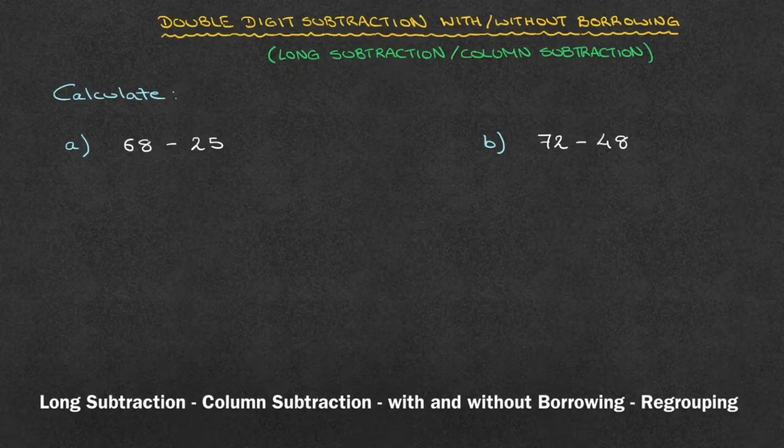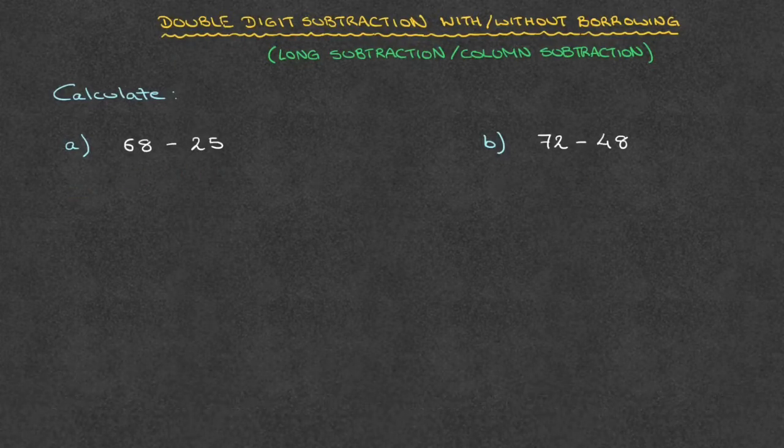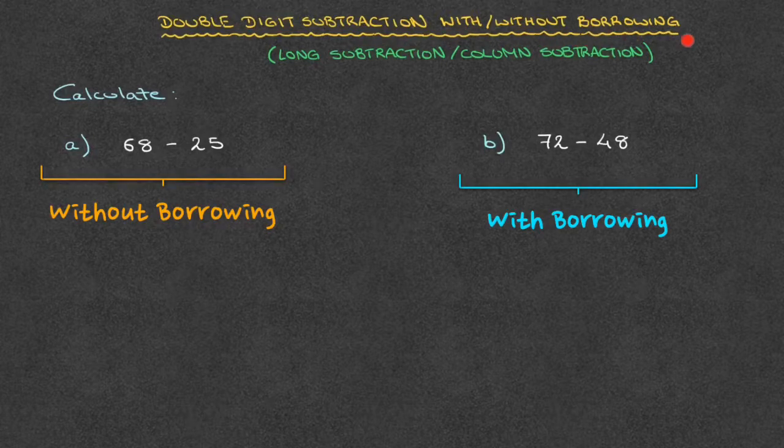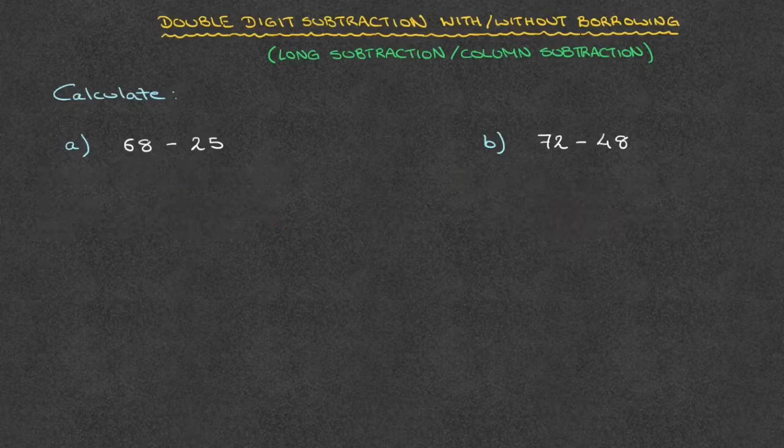Let's see how to do long subtraction, also known as column subtraction, with double-digit numbers. We'll work through two examples, and in doing so we're going to learn how to subtract with and without borrowing, or another way of saying that would be with and without regrouping. So let's get started.